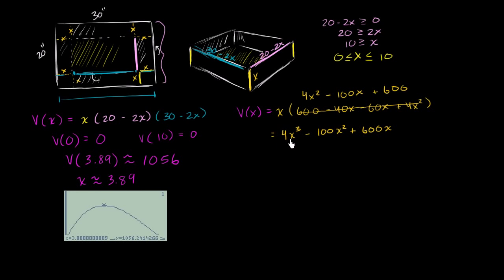Now it'll be pretty straightforward to take the derivative. So v prime of x is going to be equal to, I just have to use the power rule multiple times. So 4 times 3 is 12x to the 3 minus 1 power, 12x squared, minus 200 times x to the first power, which is just x, plus 600.